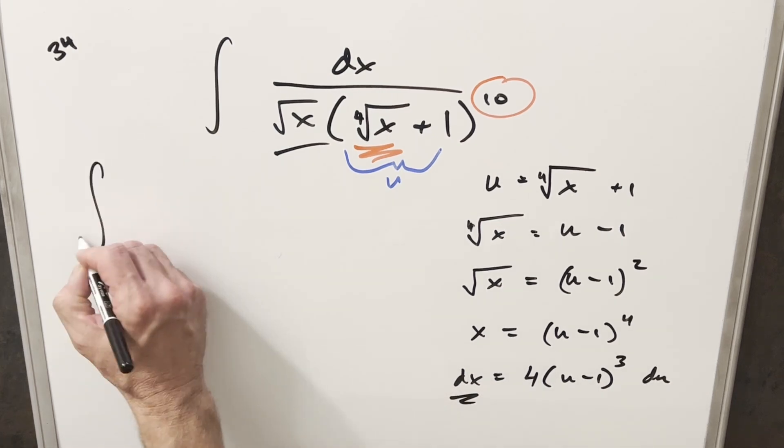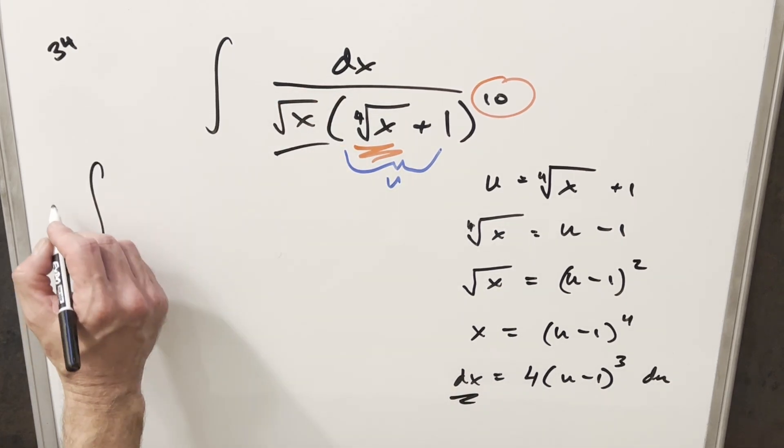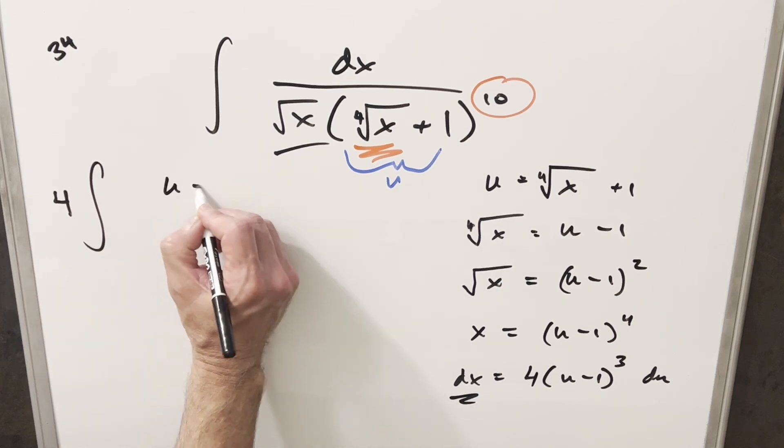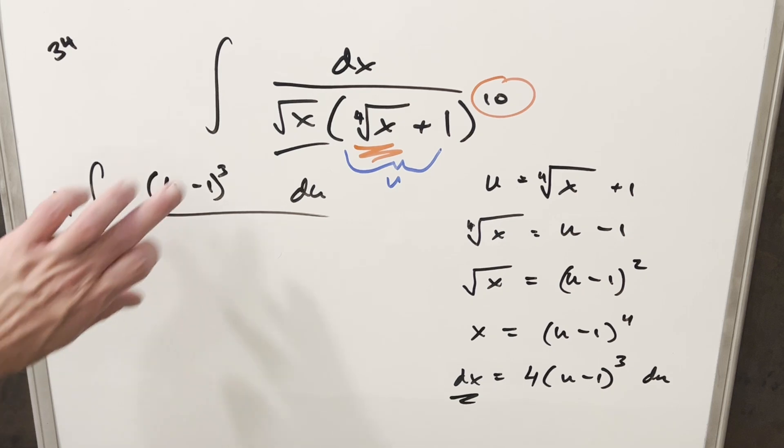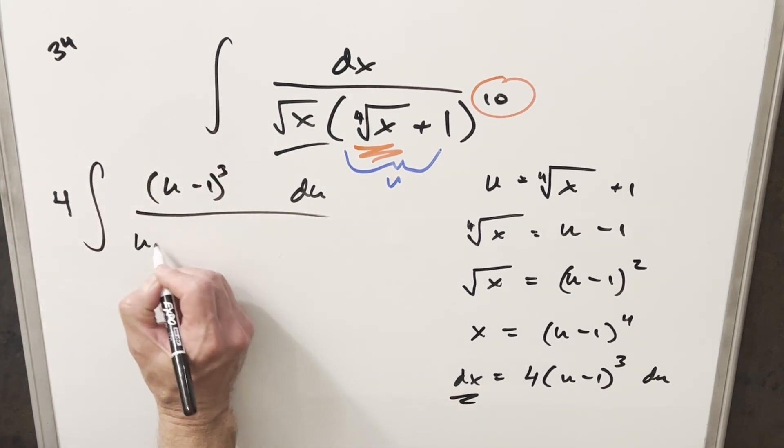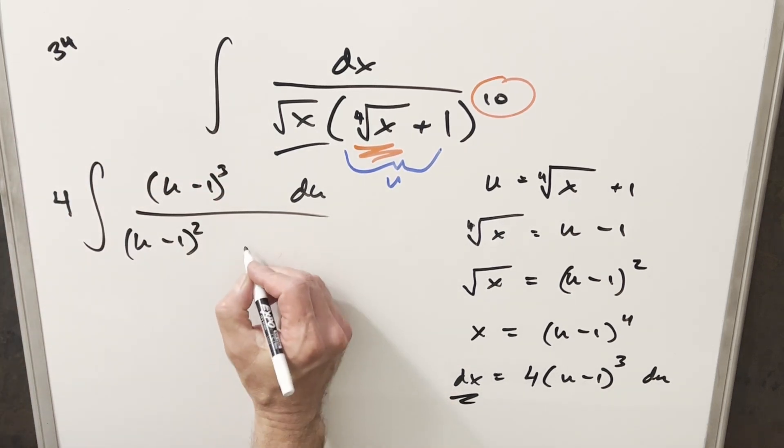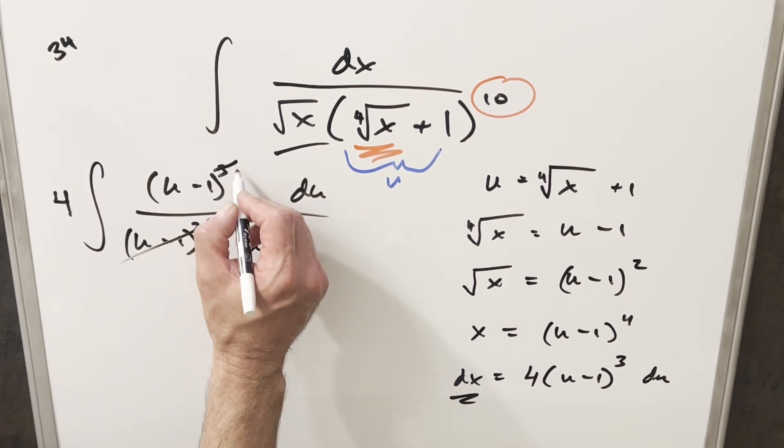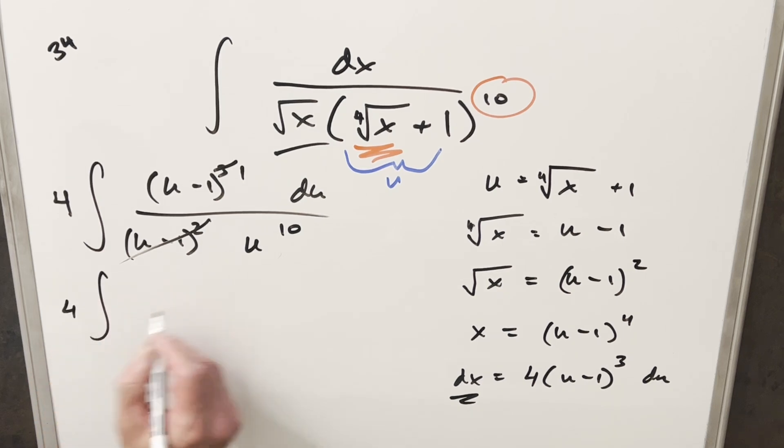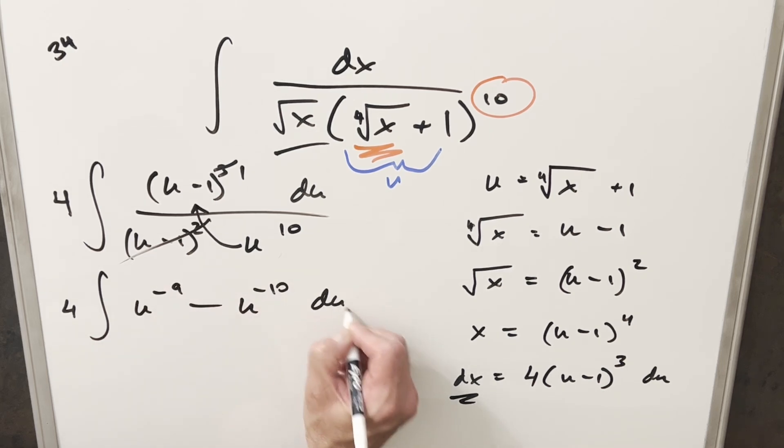So then going ahead with this, first plugging in our dx I'm going to take the 4 and bring it out front of the integral. So here we're going to have just u minus 1 cubed du. Now for square root of x we've got this thing so we're going to have u minus 1, and this piece right here it's just going to become u to the 10th. But then over here we're going to get some nice cancellation because I cancel two of these with two of these and we're just going to have u minus 1 to the 1. And then what I can do to simplify this is let's just divide the u to the 10th into the numerator and this is going to become u to the minus 9 minus u to the minus 10 du.